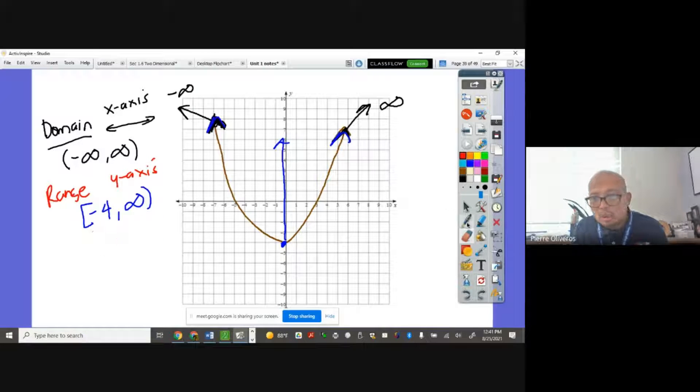Why is it also not infinity to negative 4 bracket parenthesis? First, the left number should always be smaller. And the smaller number is negative 4 compared to infinity because it's going to positive infinity, okay? So this is wrong. The right one is from negative 4 to infinity, okay?